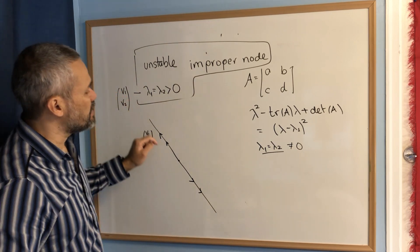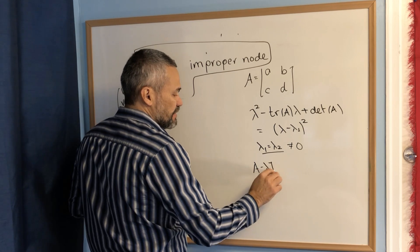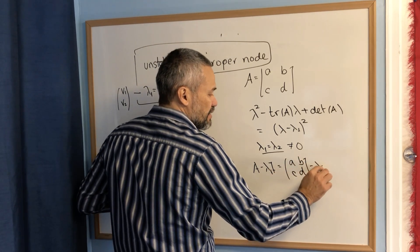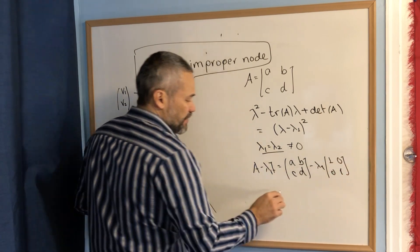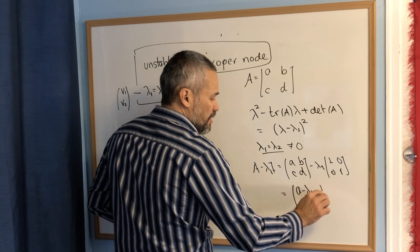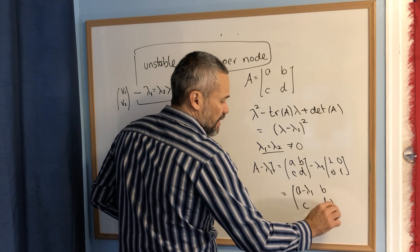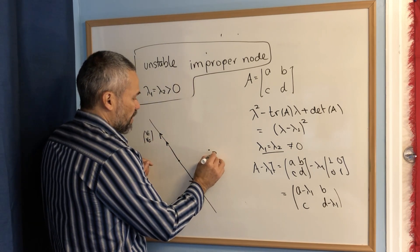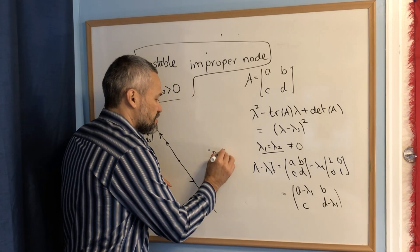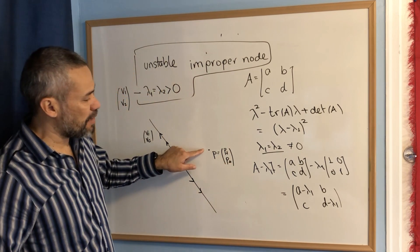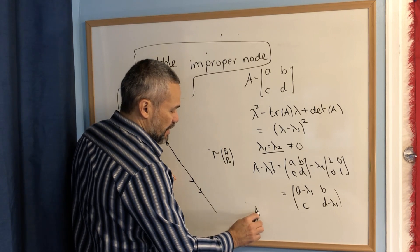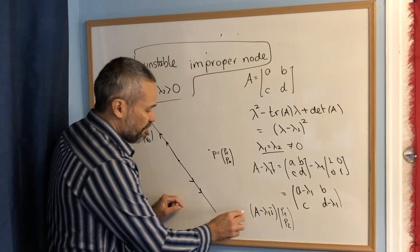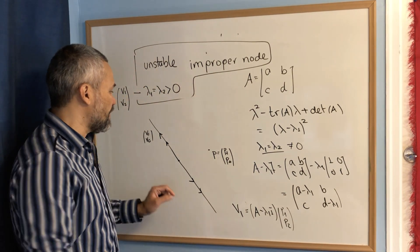Next, we consider the matrix (A − λ₁I), which is [a − λ₁, b; c, d − λ₁]. We pick a point P = (p₁, p₂) that is not on these semi-lines. We multiply the matrix (A − λ₁I) by the vector (p₁, p₂) and get a resulting vector, which we call v.